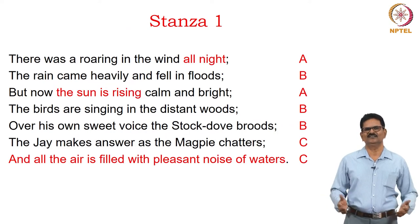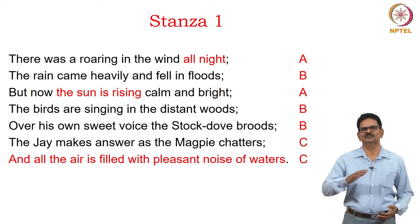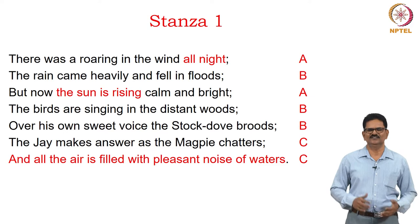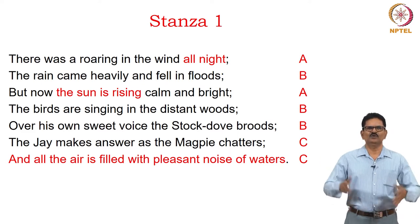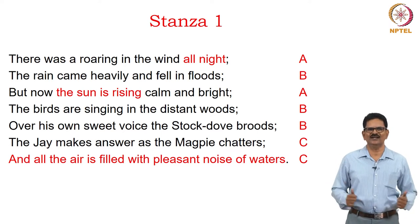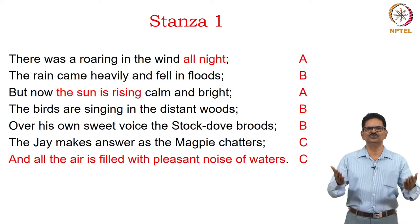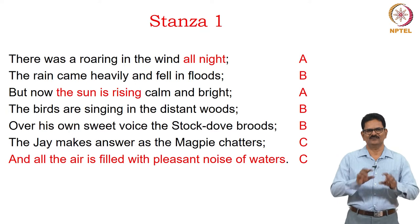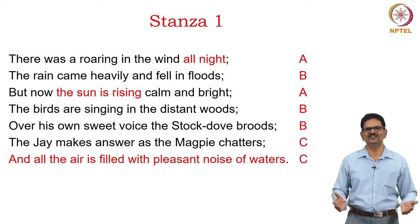We will read sample stanzas; readers are urged to read the full poem independently. The rhyme scheme is ABABBCC, found in every stanza. Stanza one: 'There was a roaring in the wind all night, / The rain came heavily and fell in floods, / But now the sun is rising calm and bright, / The birds are singing in the distant woods, / Over his own sweet voice a stark dove broods, / The jay makes answer as the magpie chatters, / And all the air is filled with pleasant noise of waters.' The last line is highlighted for its flow and rhythm.